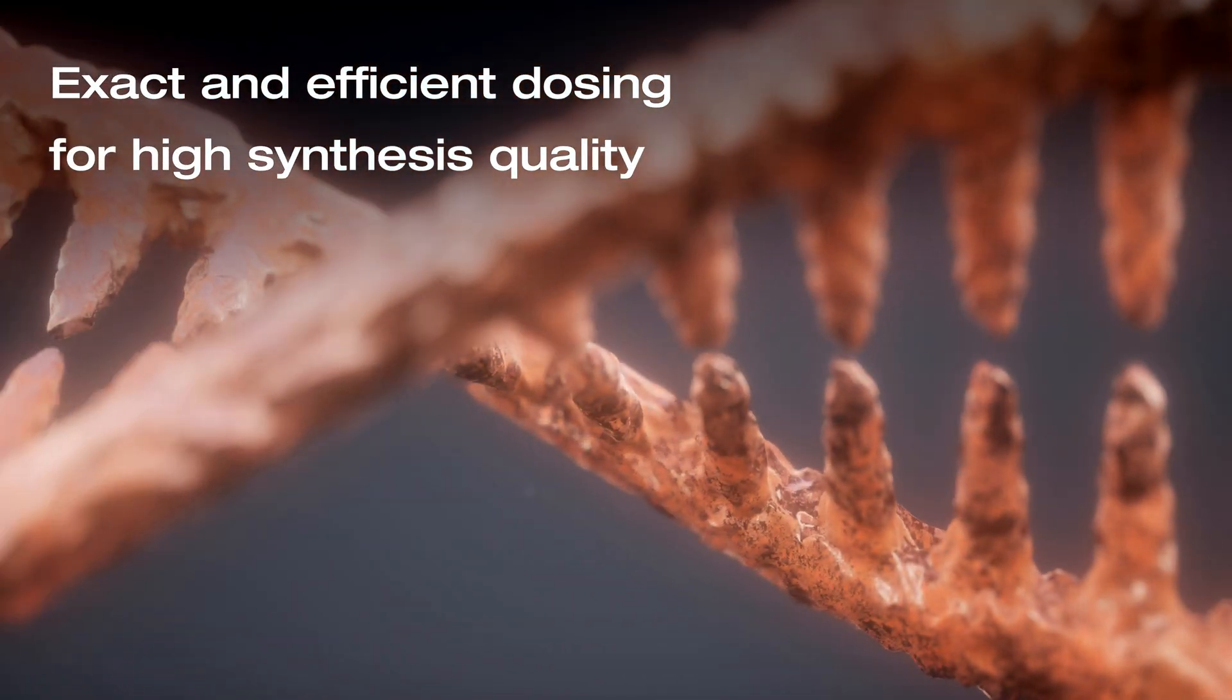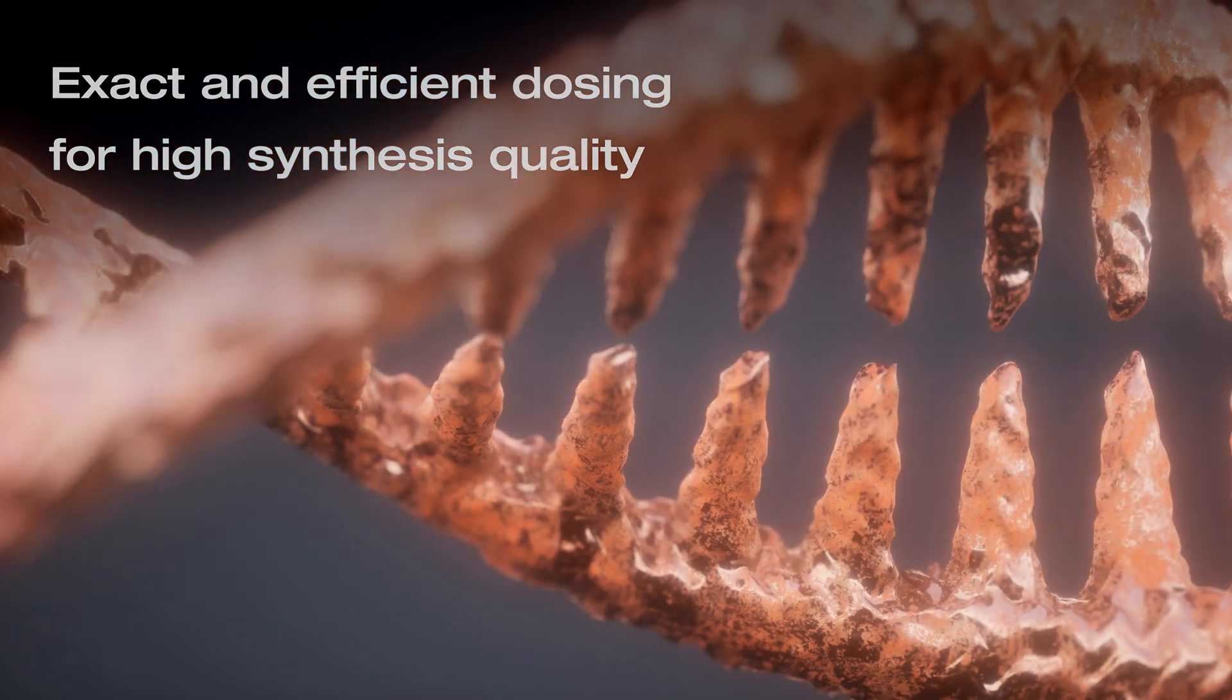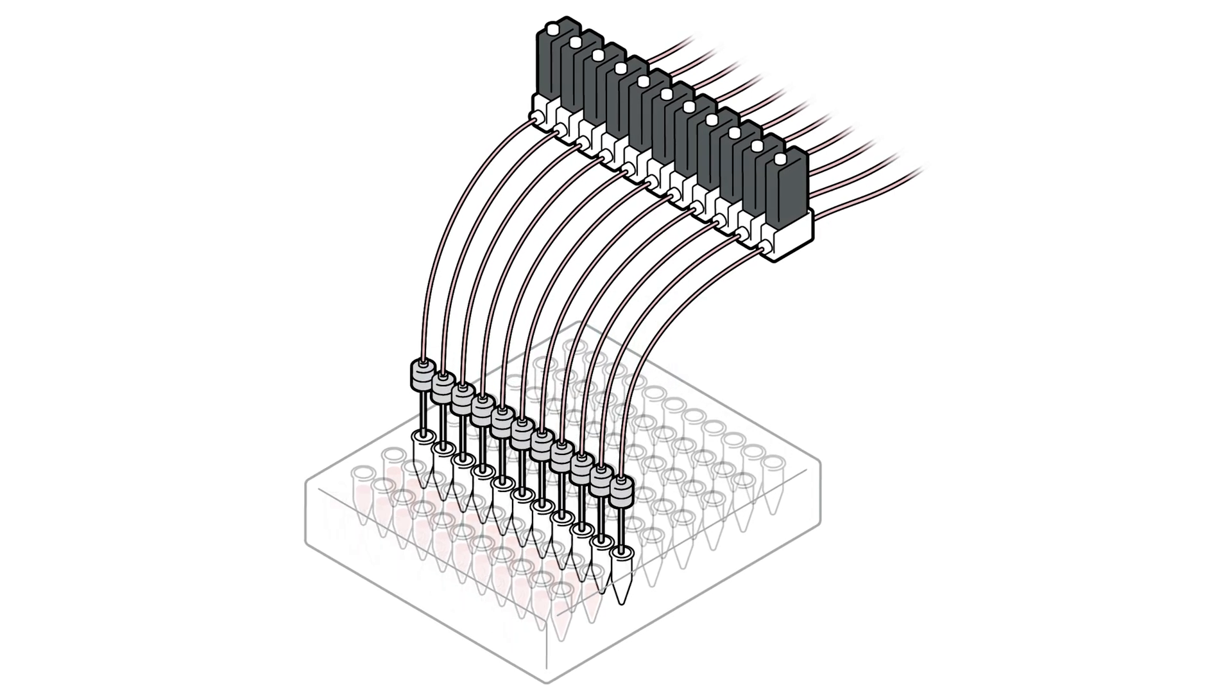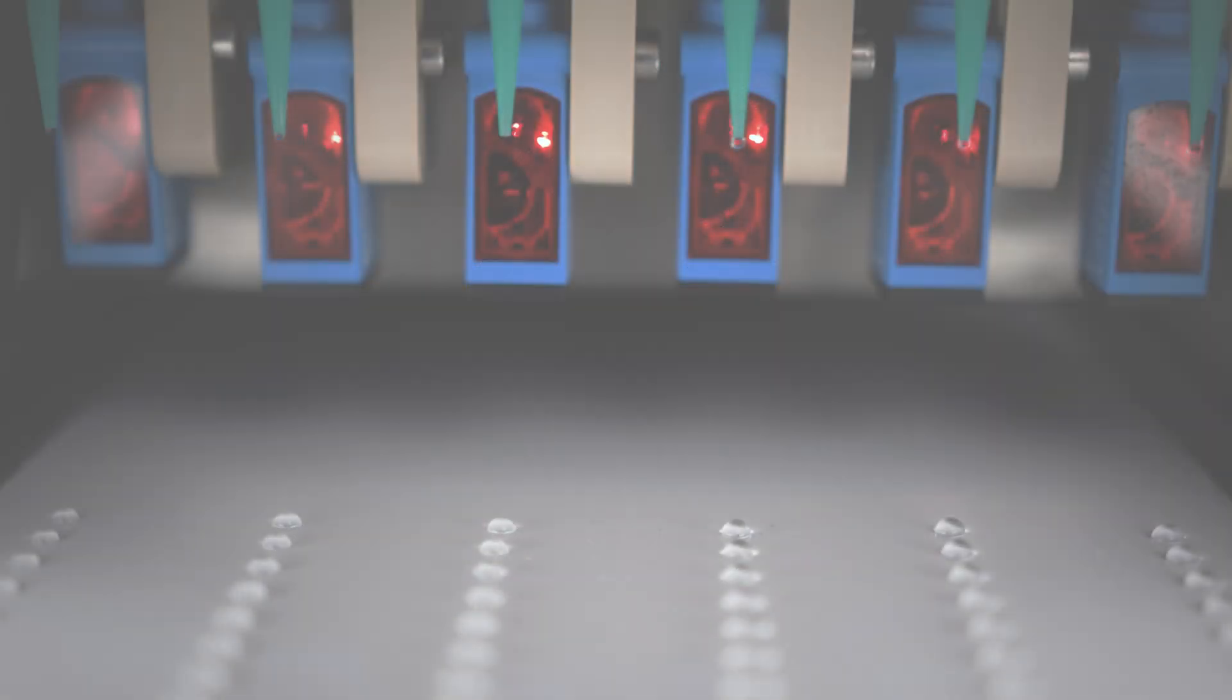The demand for oligonucleotides and artificially produced DNA in research is increasing. For example, the oligonucleotides are created via phosphoramidite synthesis. Various reagents must be dosed precisely in the microliter range.